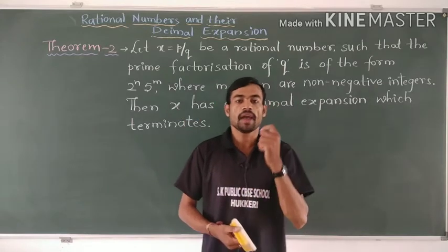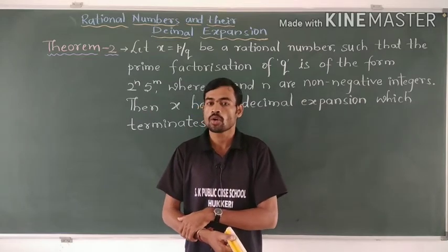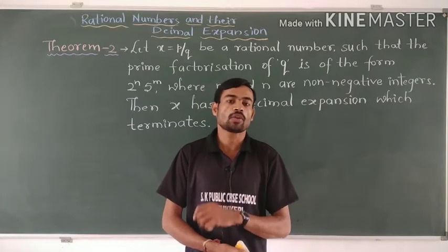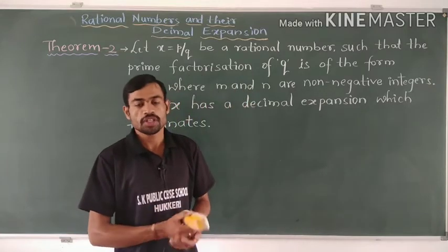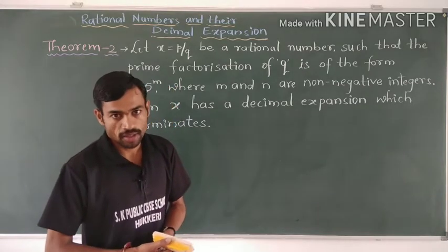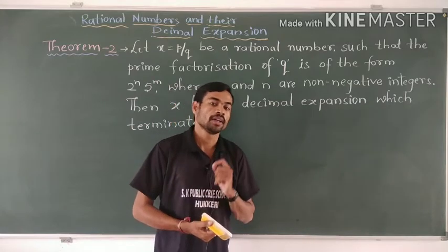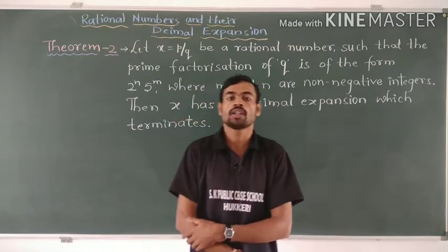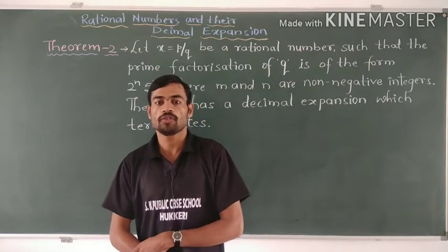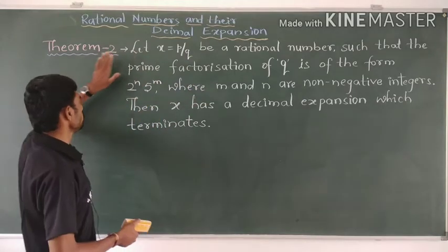x can be expressed as P by Q where P and Q are co-primes, and the prime factorization of Q is of the form 2 to the power n into 5 to the power m, where n and m are non-negative integers. That was the statement of Theorem 1. Now let us discuss Theorem 2.